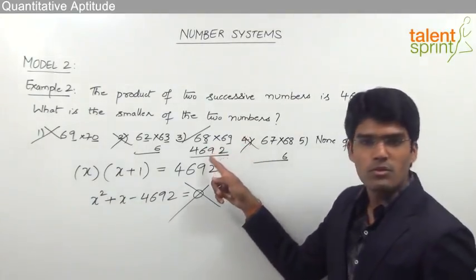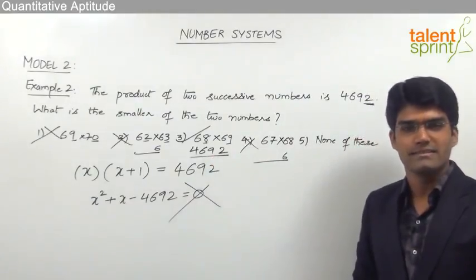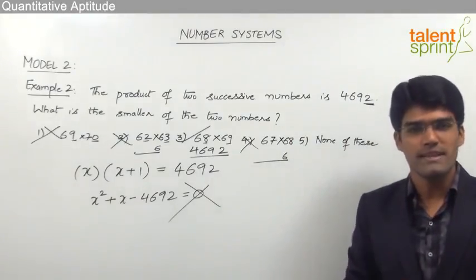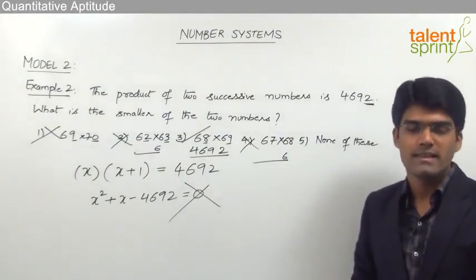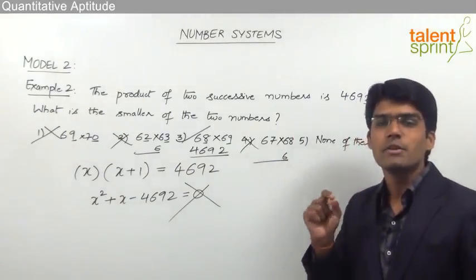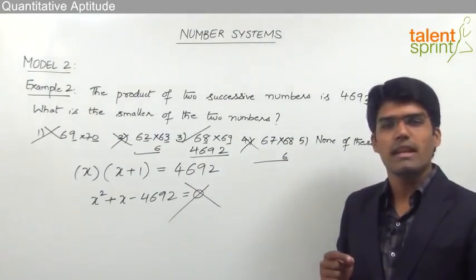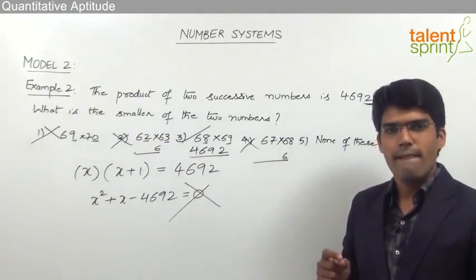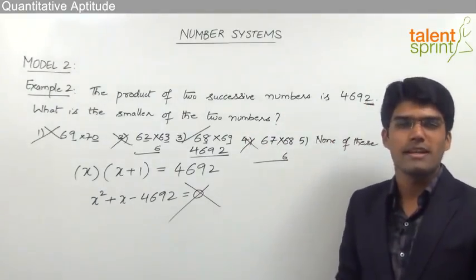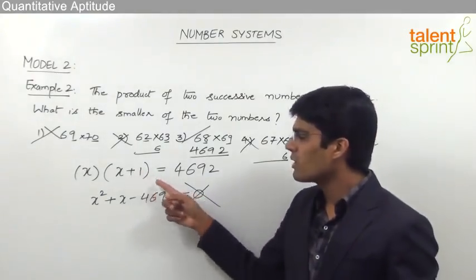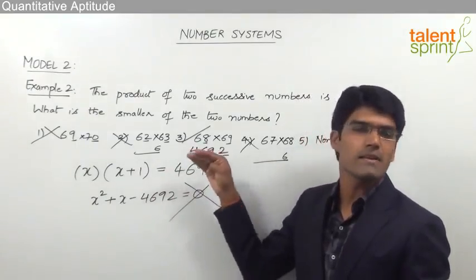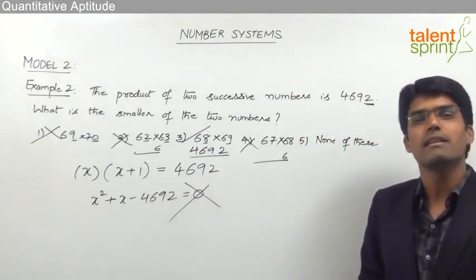If 68×69 had not equalled 4692, option 5 would be the answer. This is how, by eliminating wrong options based on the units digit concept, you can find the correct answer quickly. There is no point in solving the quadratic equation as it is very lengthy. Always solve such questions by eliminating wrong options.